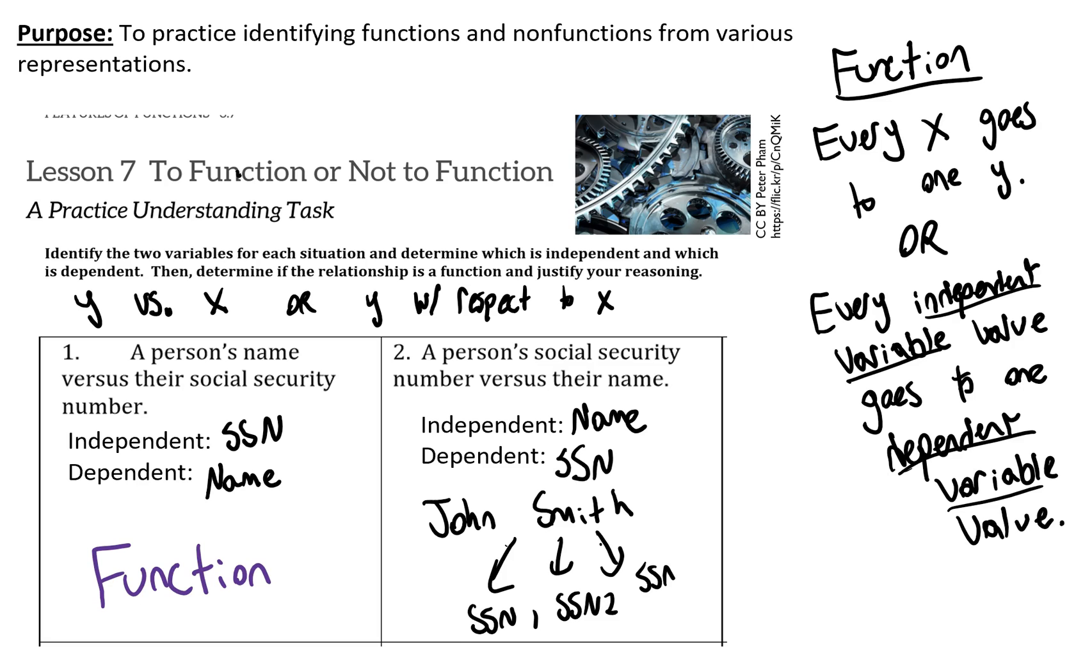So I'll call it SSN 1, SSN 2, SSN 3. They each are named John Smith but they have different social security numbers. There's probably hundreds of people with that name. So that is not going to be a function.